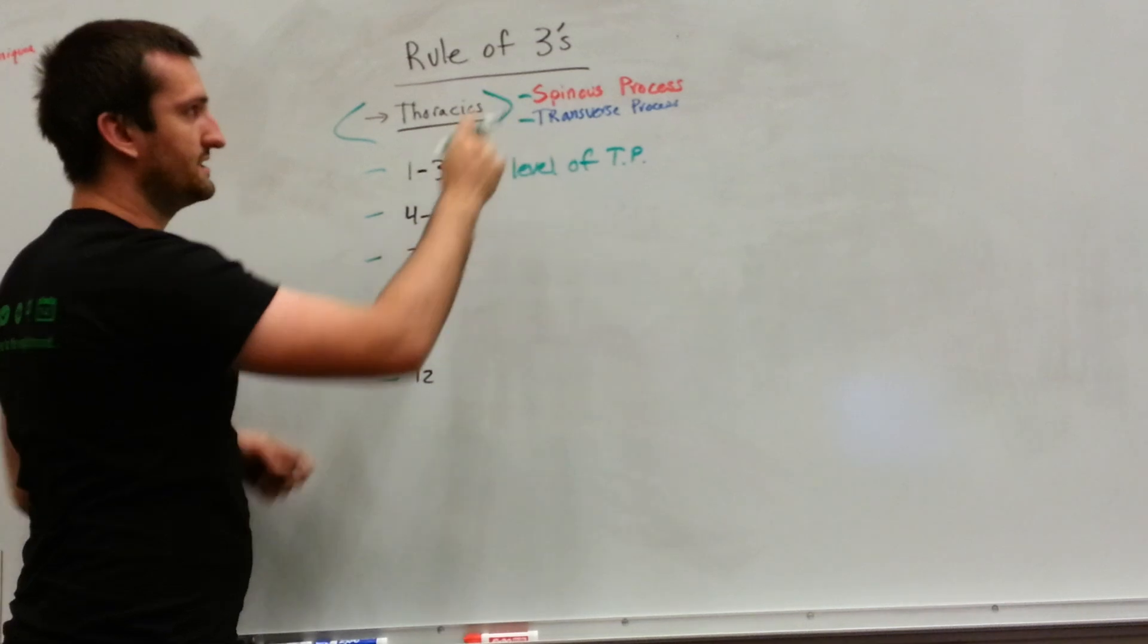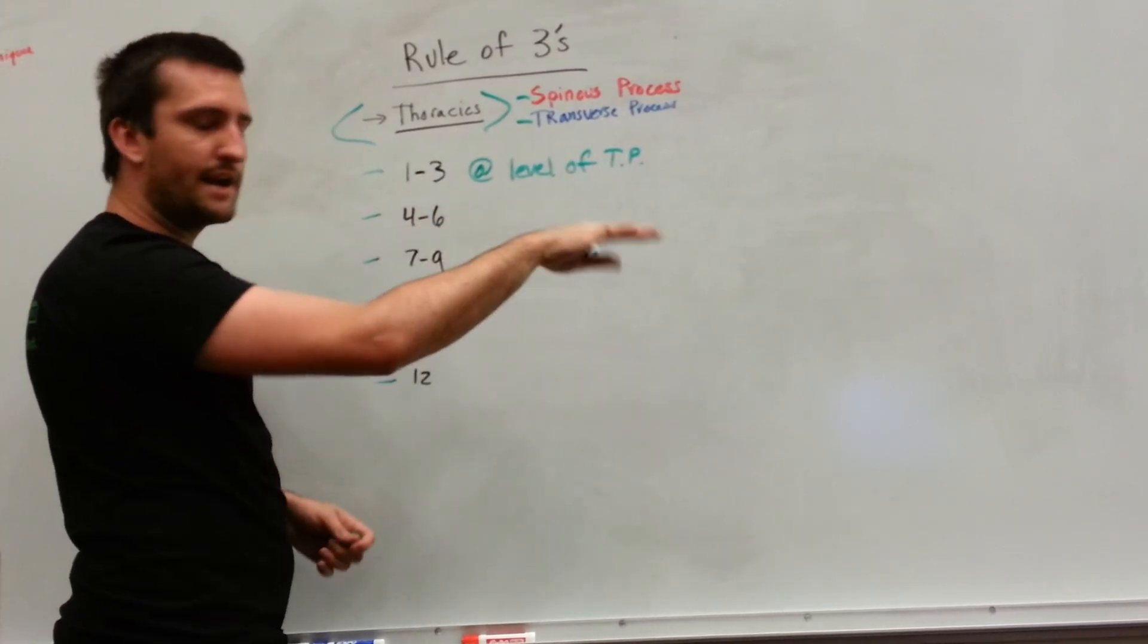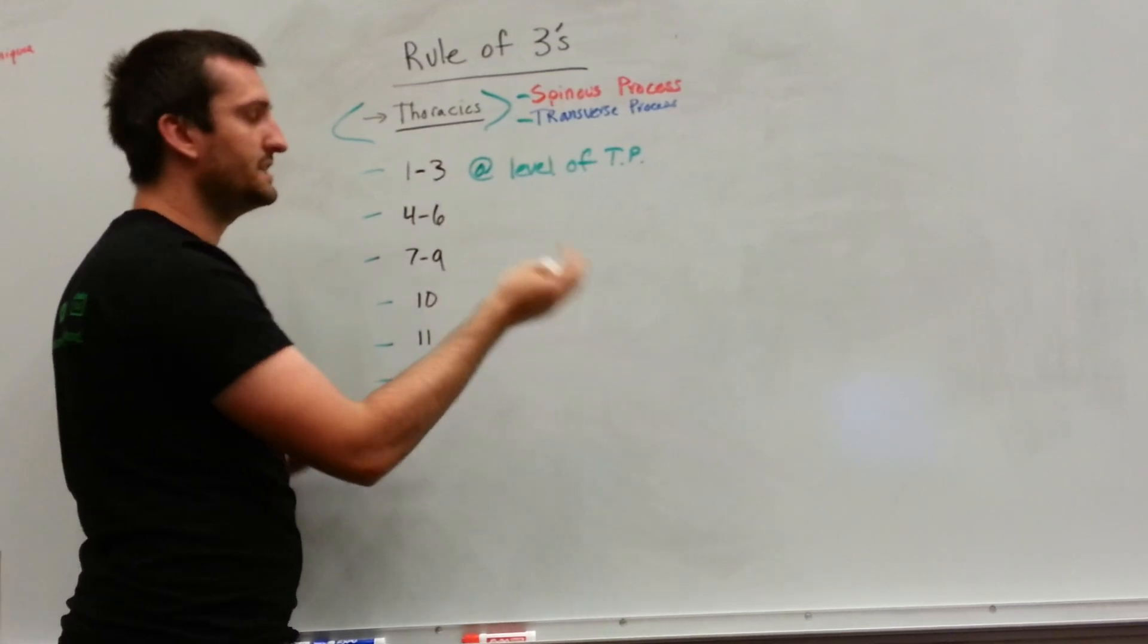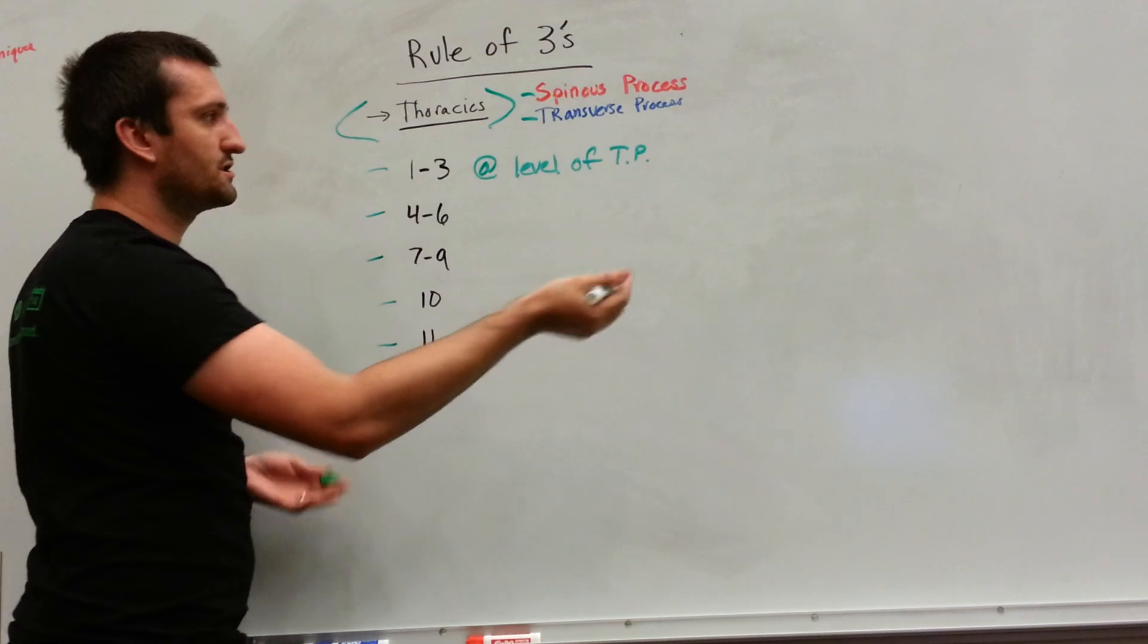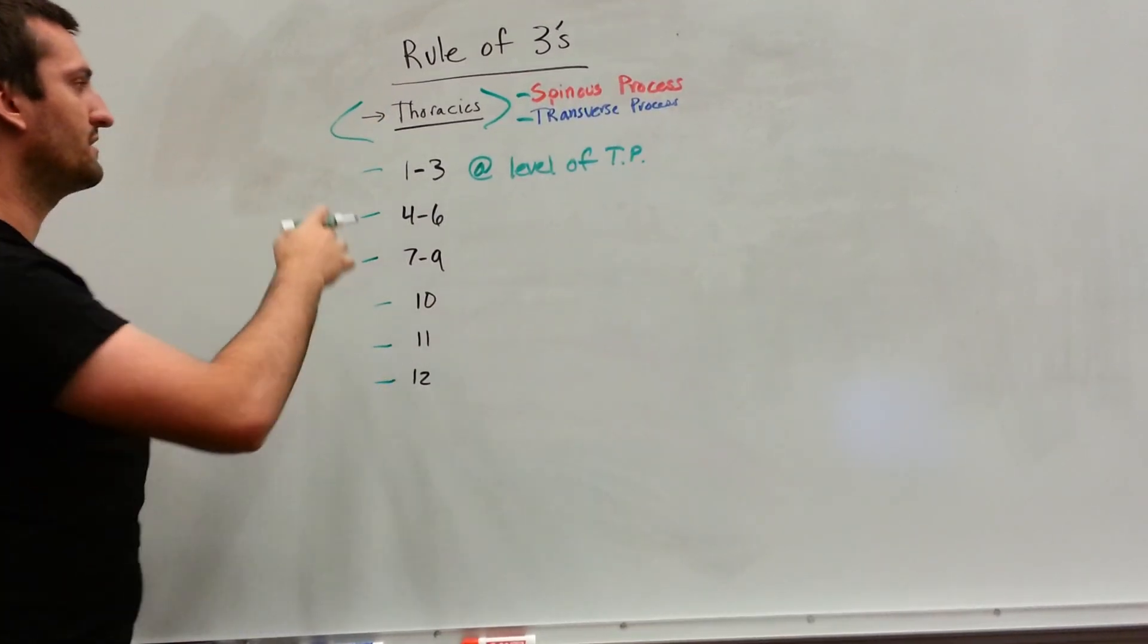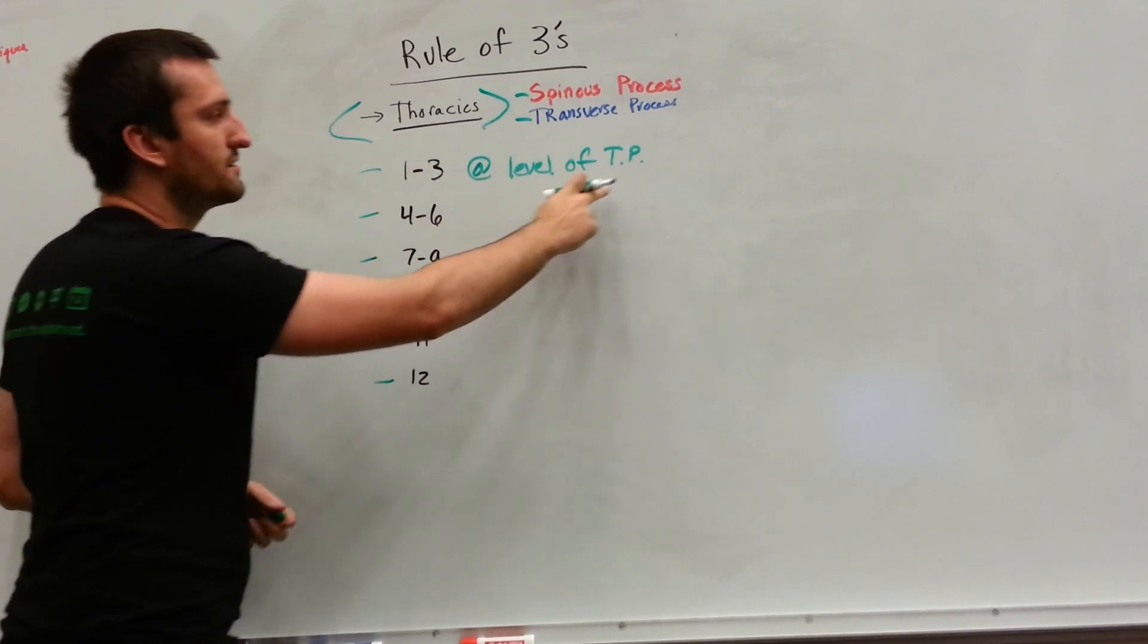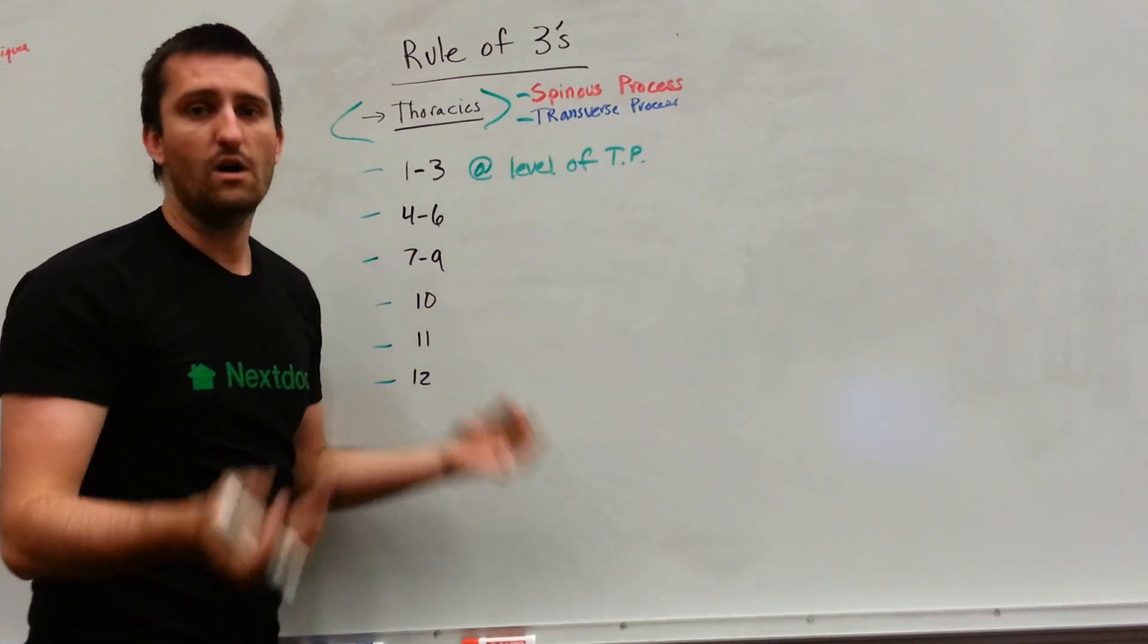The spinous process will stick straight out the back of T1, T2, and T3. So it'll be at the level of the transverse process of that vertebral segment. So the T1, the tip of the spinous process, will be at the transverse process of T1.